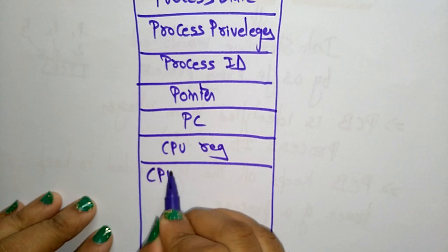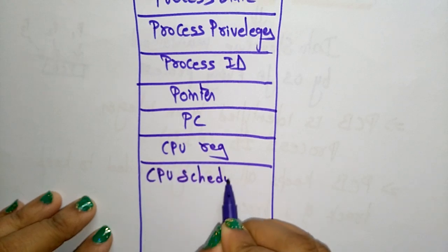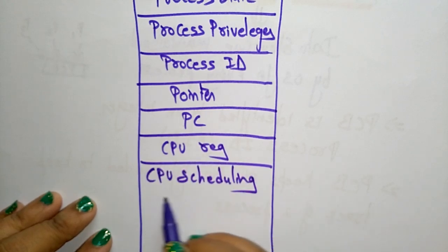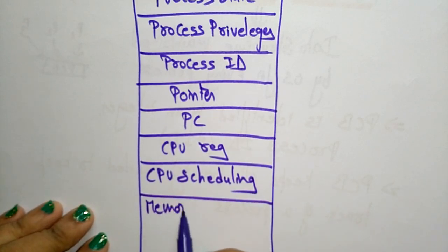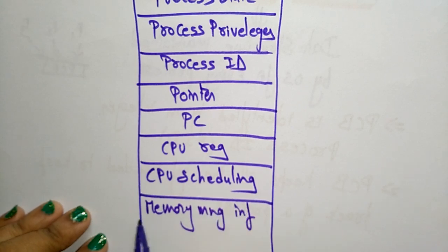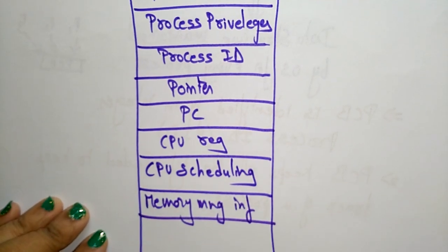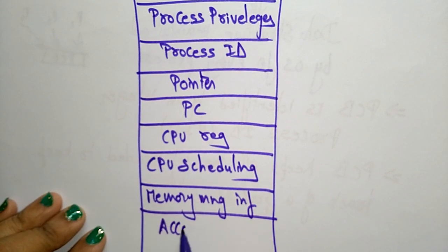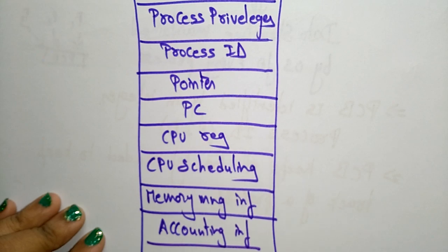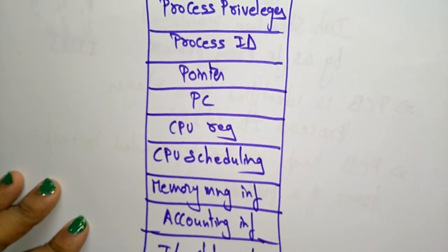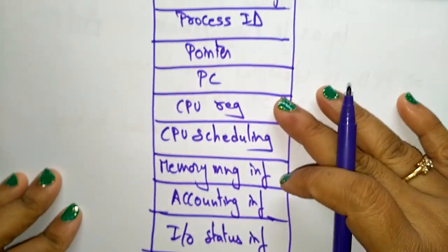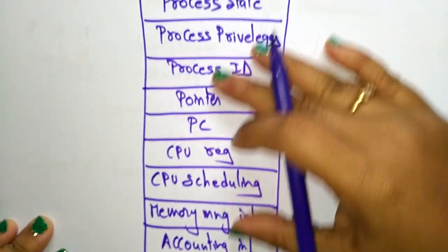It also stores CPU scheduling information — based on the priority, which process has to be scheduled first — as well as memory management information, accounting information, and I/O status information.